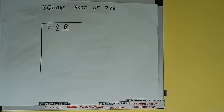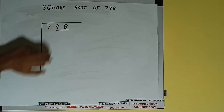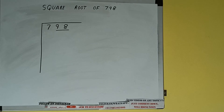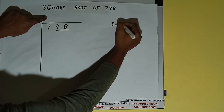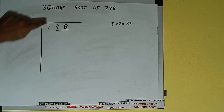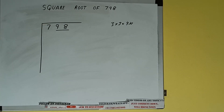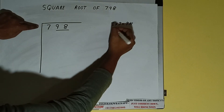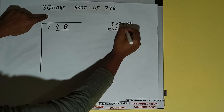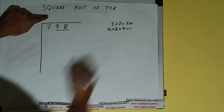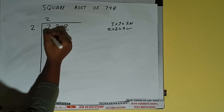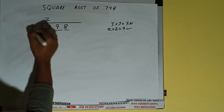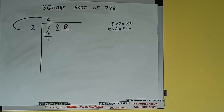The rule is: whatever number we write here, we have to write here also. If we write 3 here and 3 here, it will be 9, which is greater than 7, so we cannot take it. If we write 2 here and 2 here, it will be 4, which is good to take. So 2 here and 2 here — 4 subtract, 3 will be left. We did 2 into 2.